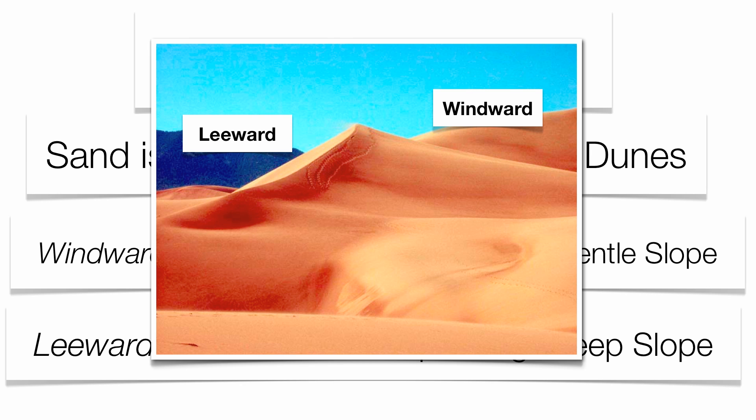Dunes tend to migrate — they tend to move. In many cases, especially in beach areas, you might see plants planted on the dunes to keep them from actually moving.